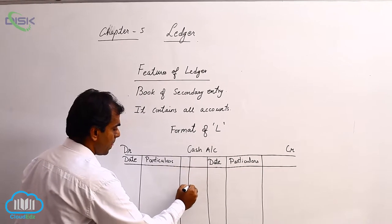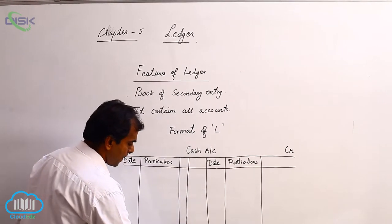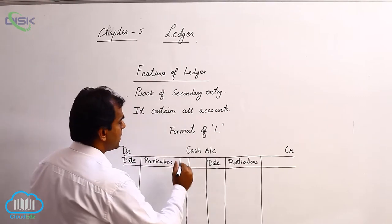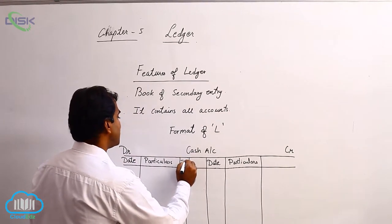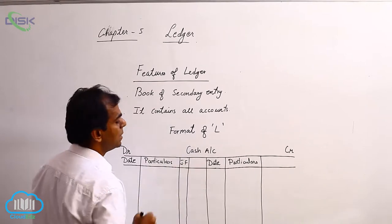The third column, we will call it JF in short, which is nothing but journal folio.